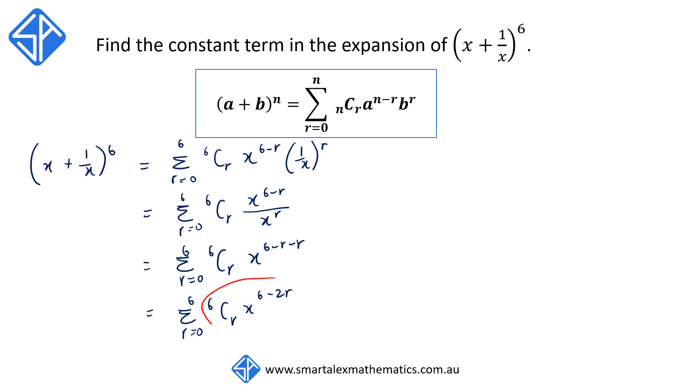This expression here is the general term for the expansion of x plus 1 over x to the power of 6. Since we're looking for the constant term, we're effectively looking for the scenario when x is to the power of 0, because when x is to the power of 0, we effectively get 1.